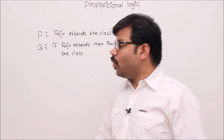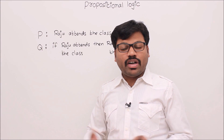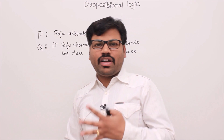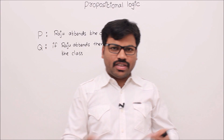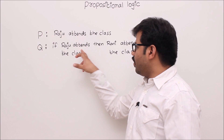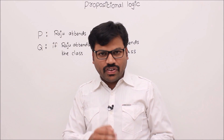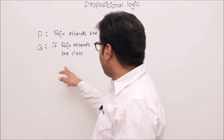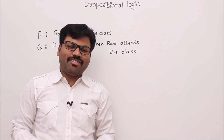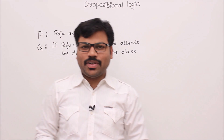Is this conclusion only for Raju and Rani? What about Rani and Vani? What about other pairs? Whenever you have this kind of statement structure, you can always infer that Rani attends the class. Let's see applications of propositional logic in computer science.